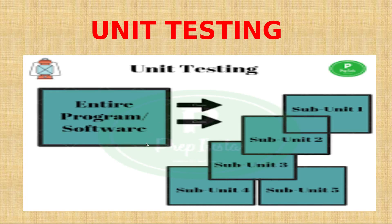Here is the diagrammatic definition of unit testing. This is the entire program — the whole software. It consists of four or five subunits. These five subunits are individually executed and individually tested. This type of testing is called unit testing. When you are developing software, during the software development, you can perform unit testing.